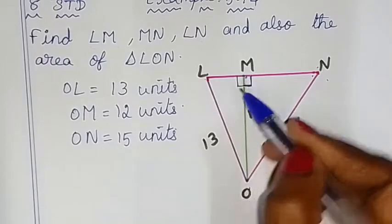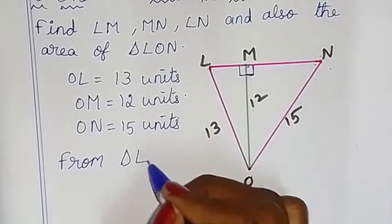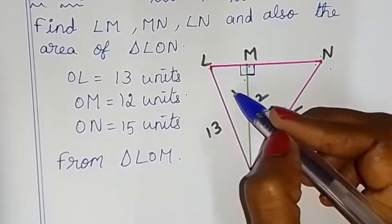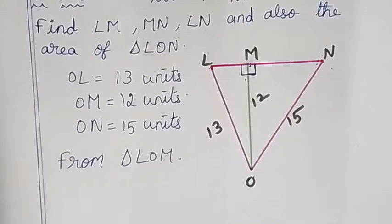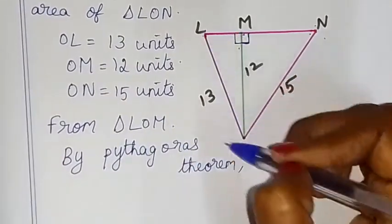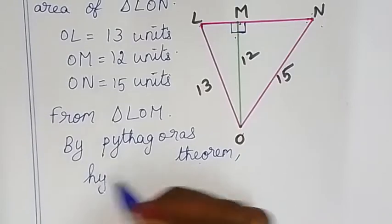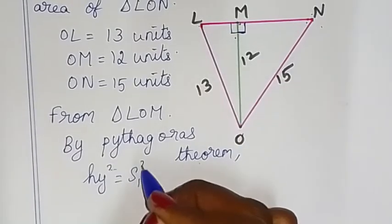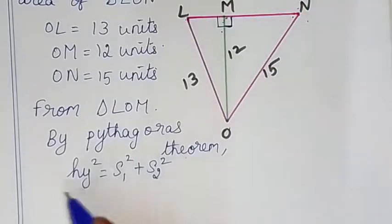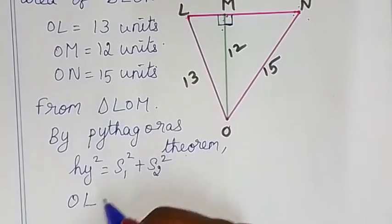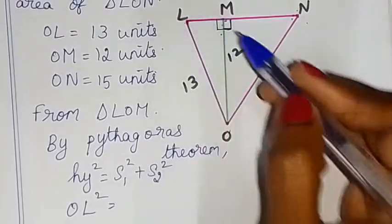First, find the LM value from triangle LOM. Triangle LOM is a right angle triangle, so we will use the Pythagorean theorem to find LM. By the Pythagorean theorem, for a right angle triangle: hypotenuse squared is equal to side 1 squared plus side 2 squared.